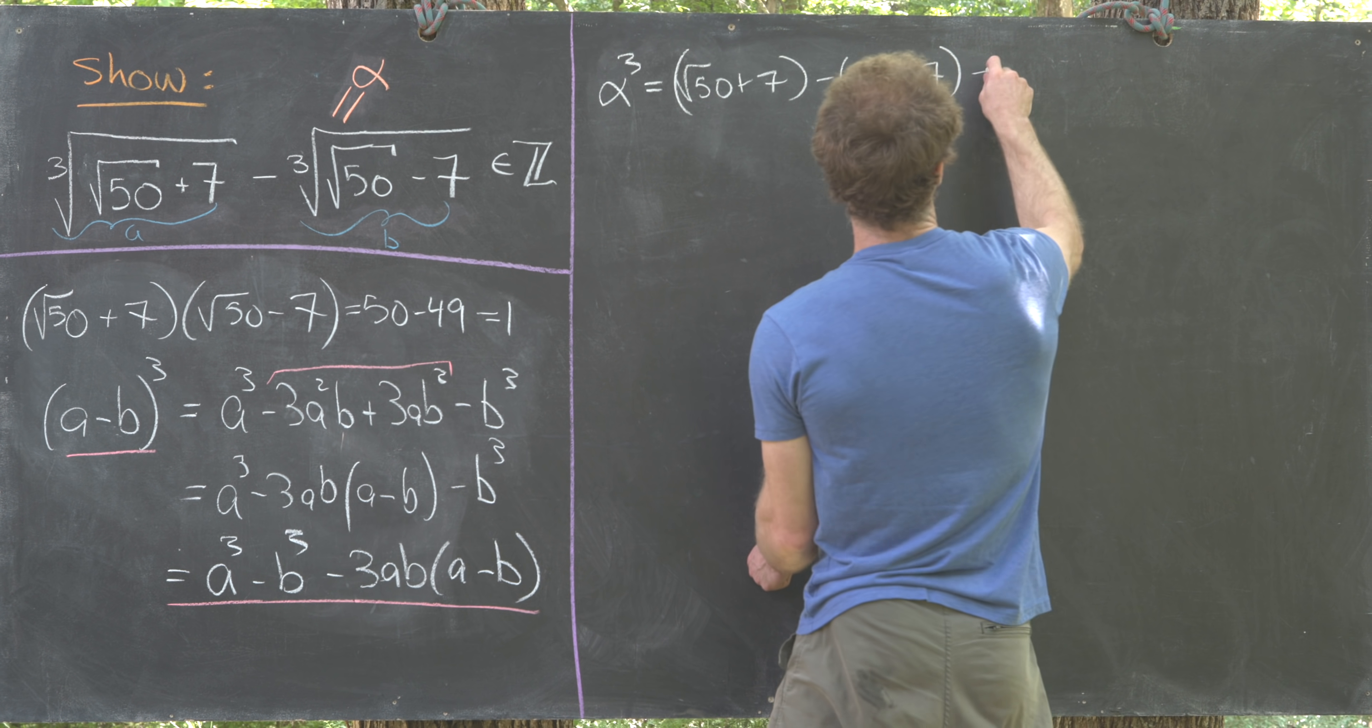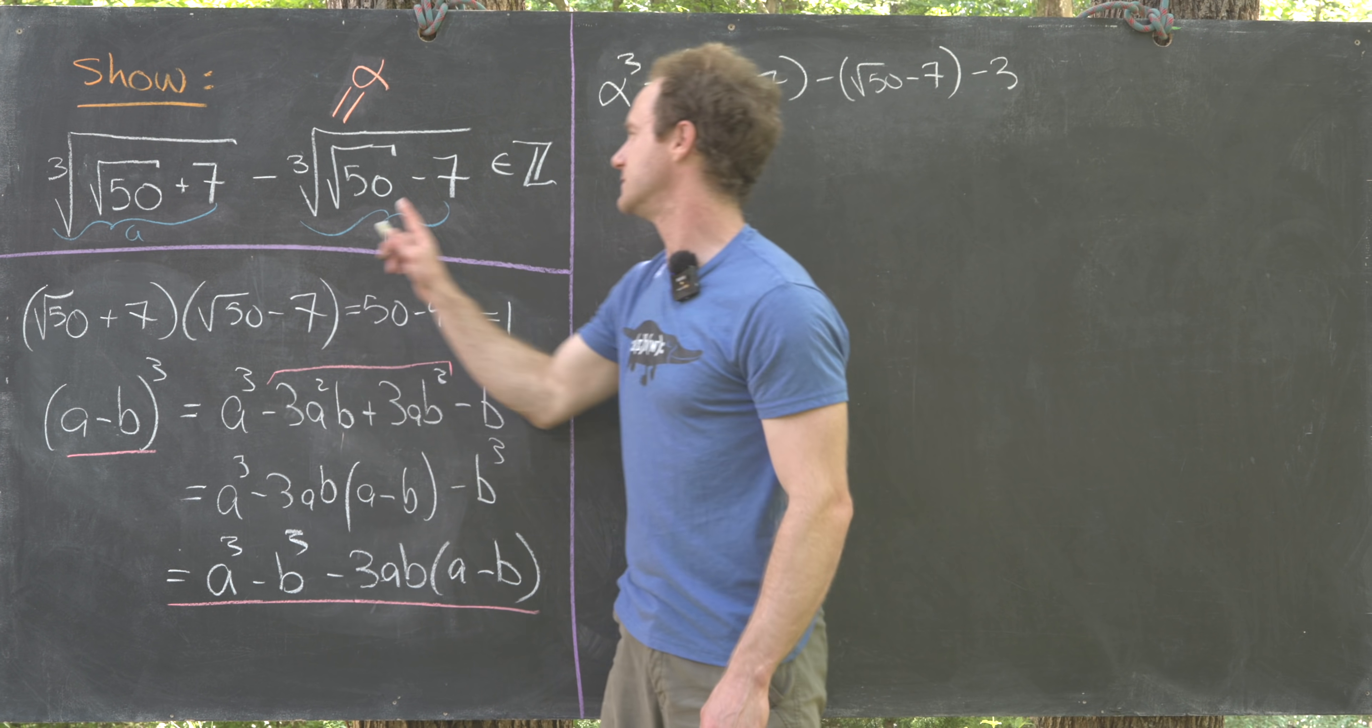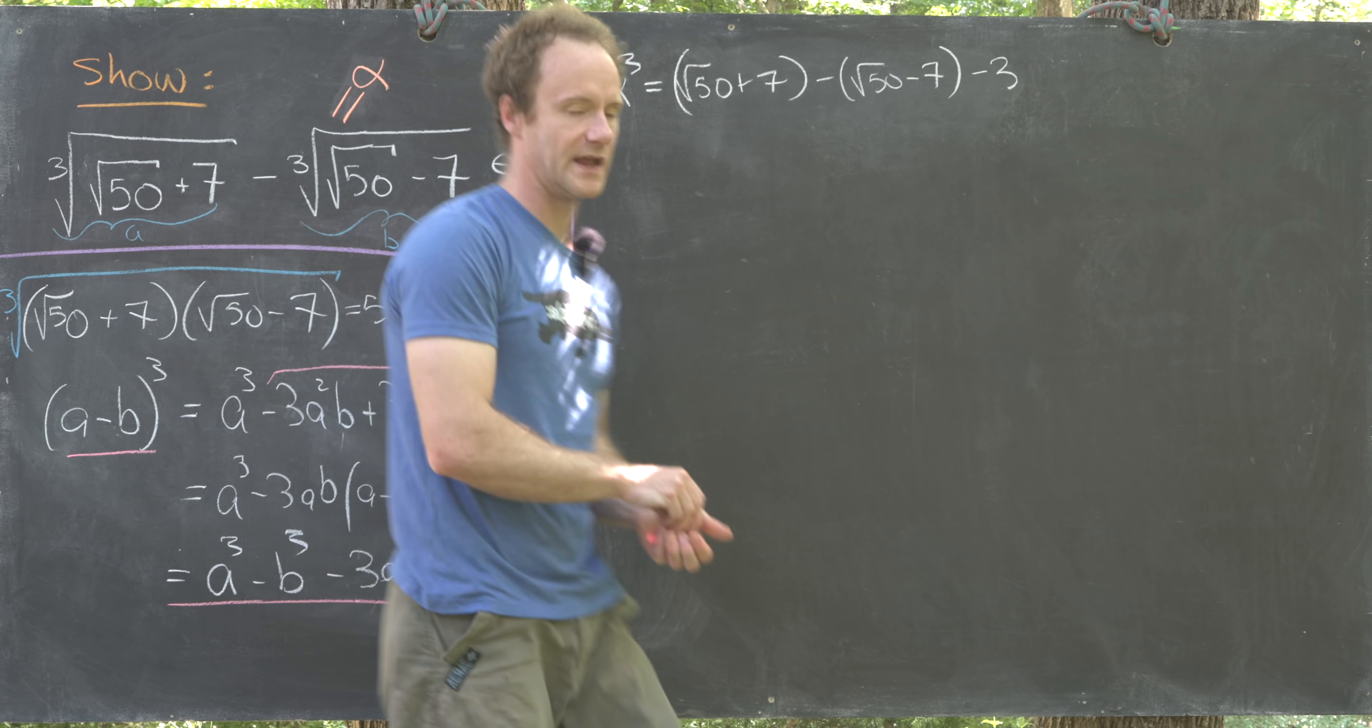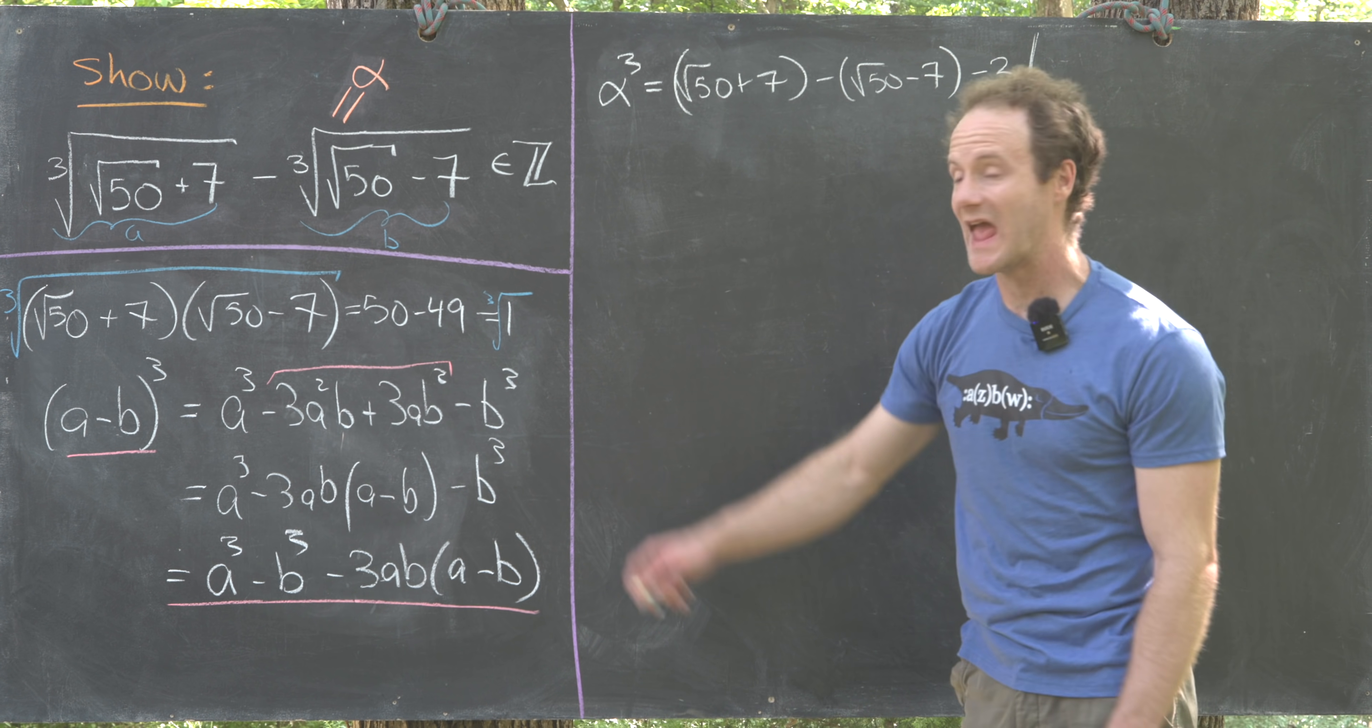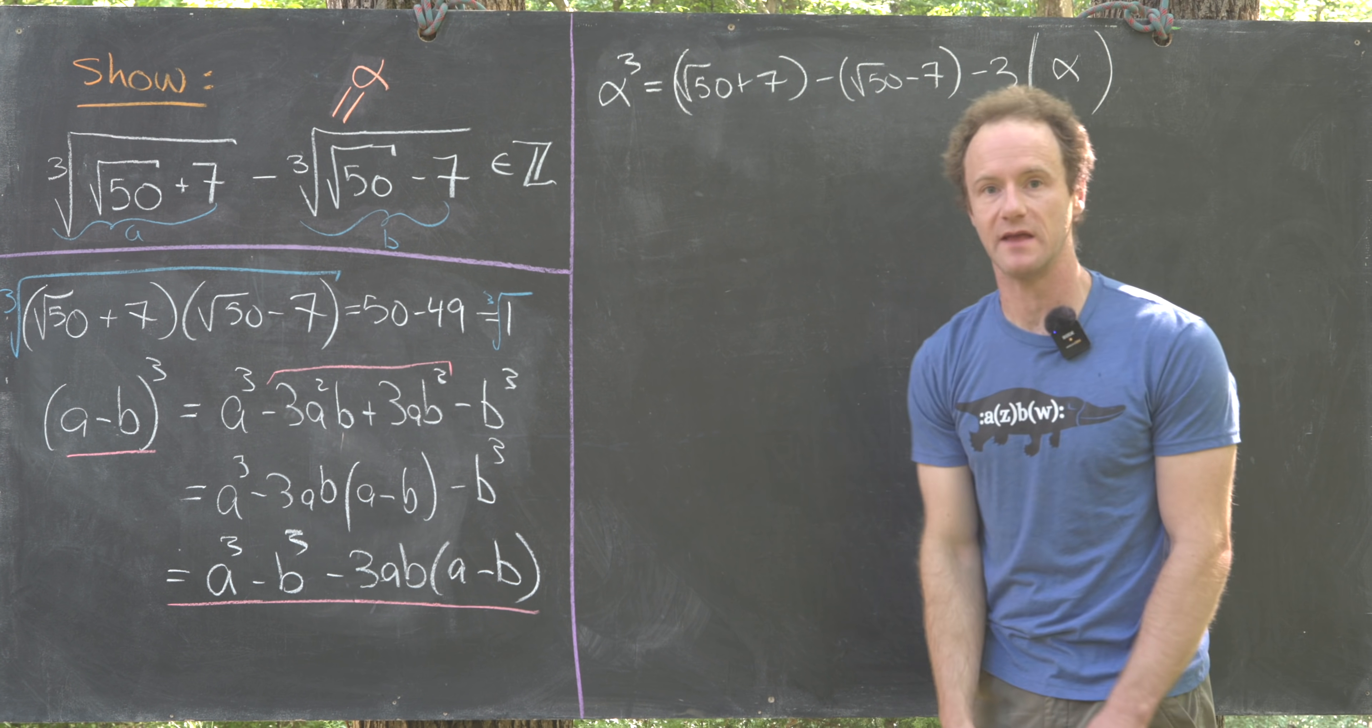Then we'll have minus 3 times ab. But I want to notice that if we take a times b, that's essentially the cube root of this formula right here, which is the cube root of 1 in our case. The cube root of 1 is 1, so we can just write 3 times 1, that's our ab term. Then we'll have a minus b, but notice a minus b is exactly alpha, so I can just write alpha there for our a minus b.